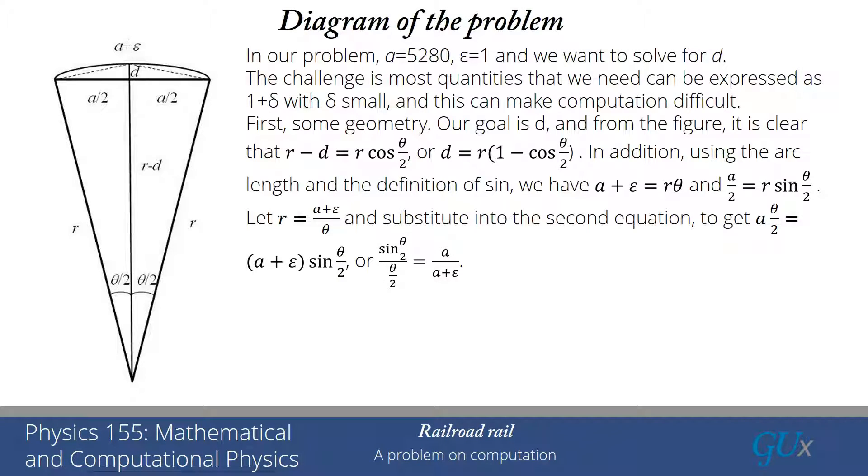Remember, A is 5,280 and A plus epsilon is 5,281. So A over A plus epsilon is a number that is very slightly less than 1. I'm trying to solve sine x over x equals some number that is slightly less than 1.